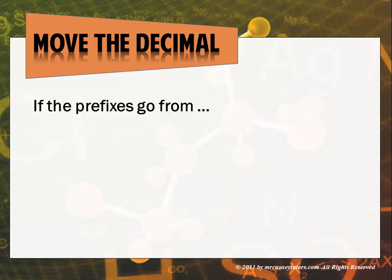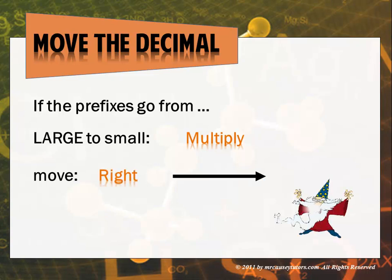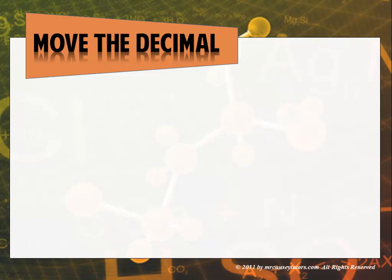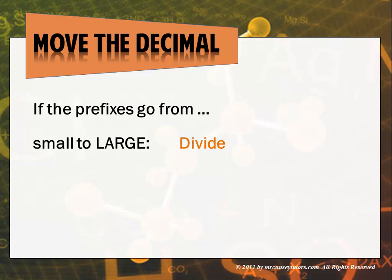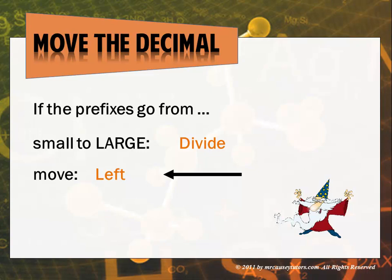If the prefixes go from a large to small, you're going to multiply, which means then move the decimal to the right. And if your prefixes go from small to large, then you're going to divide and move the decimal to the left. Now, you might be asking yourself, what do I mean by this?